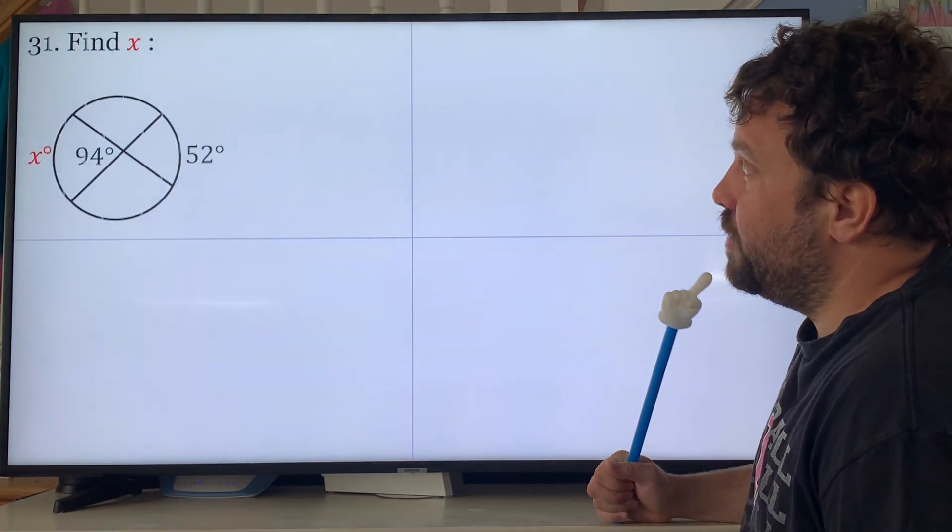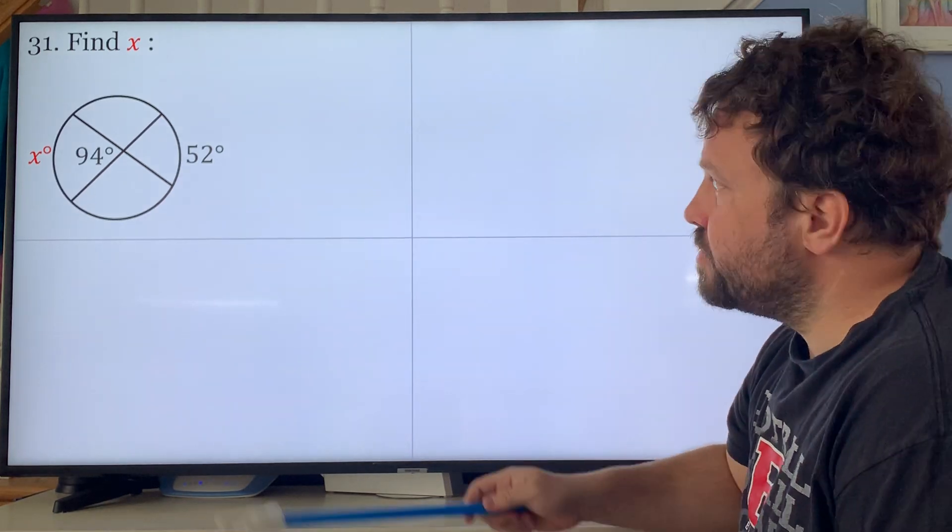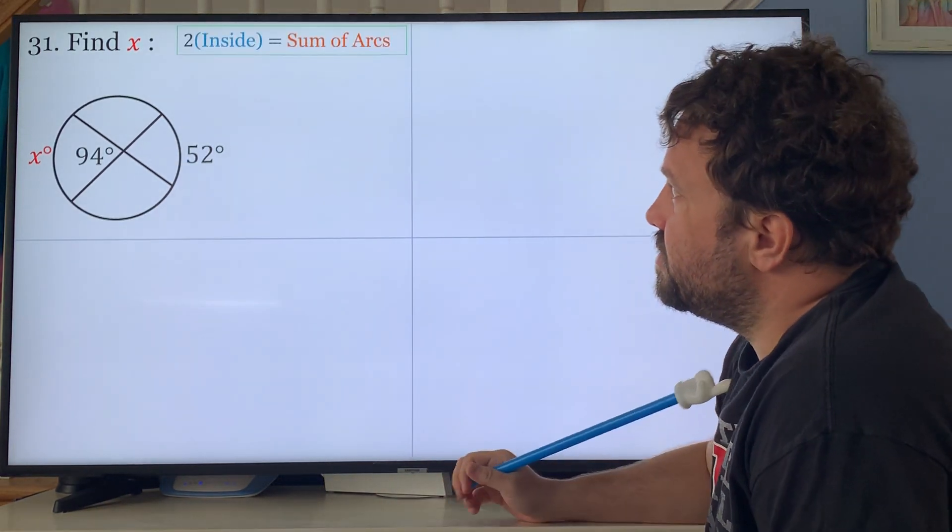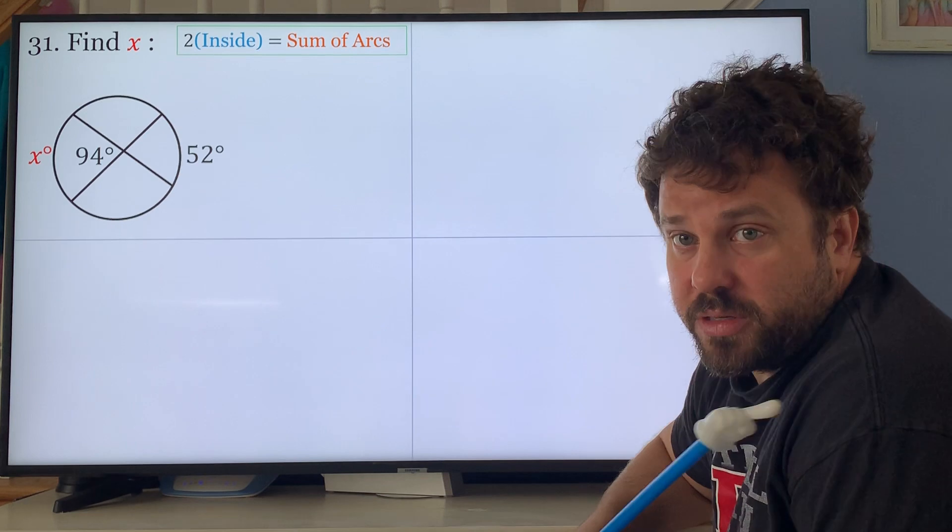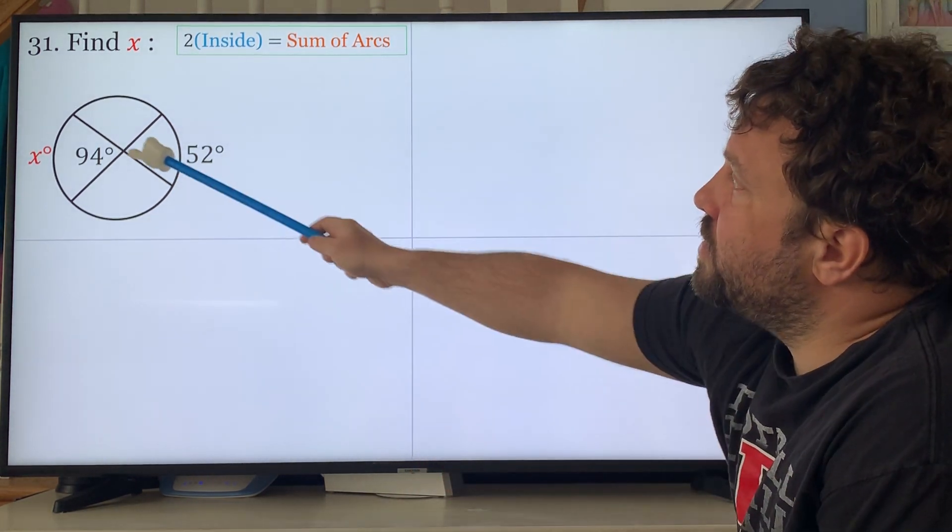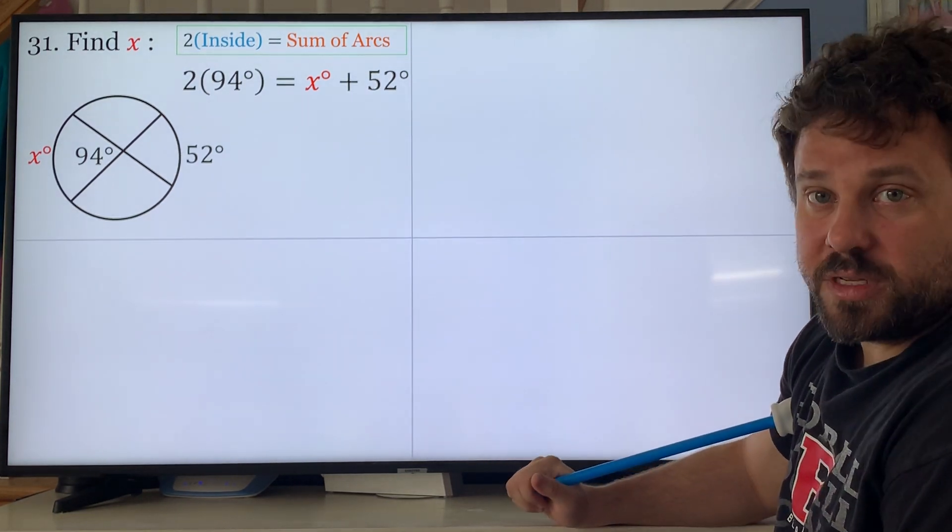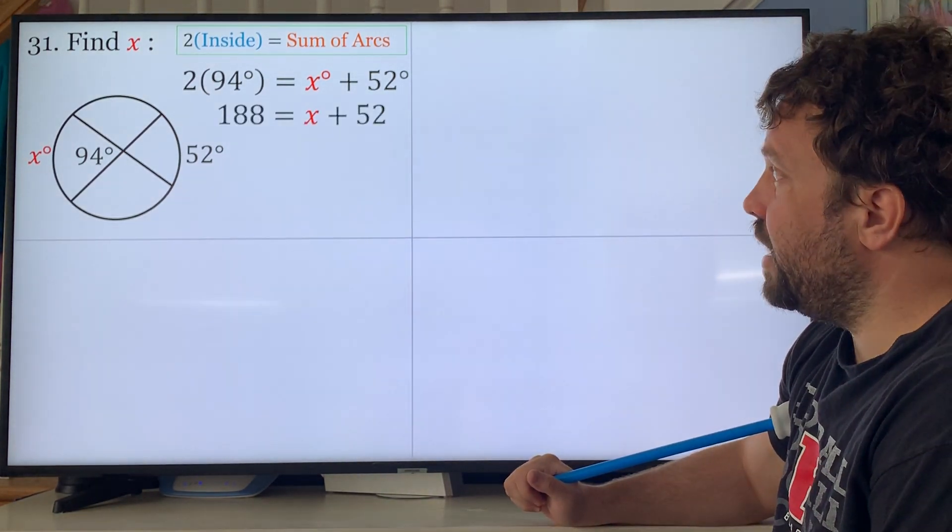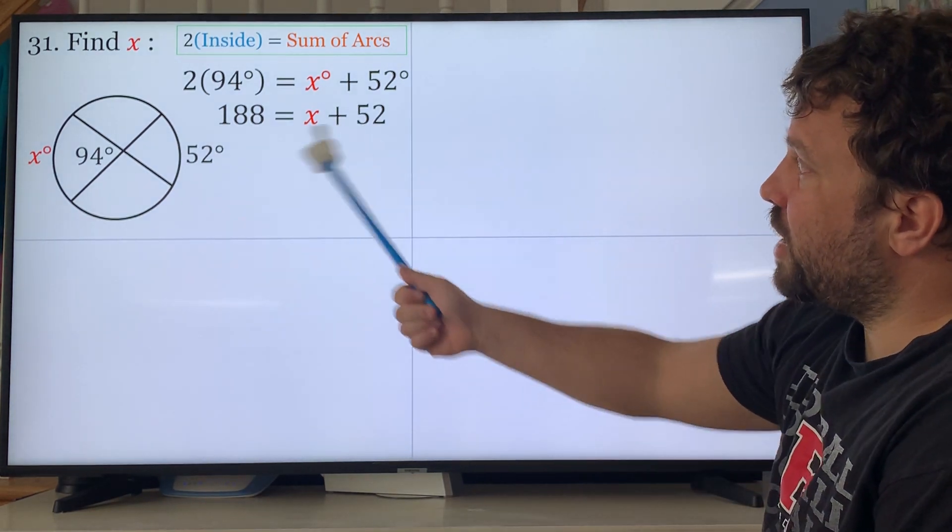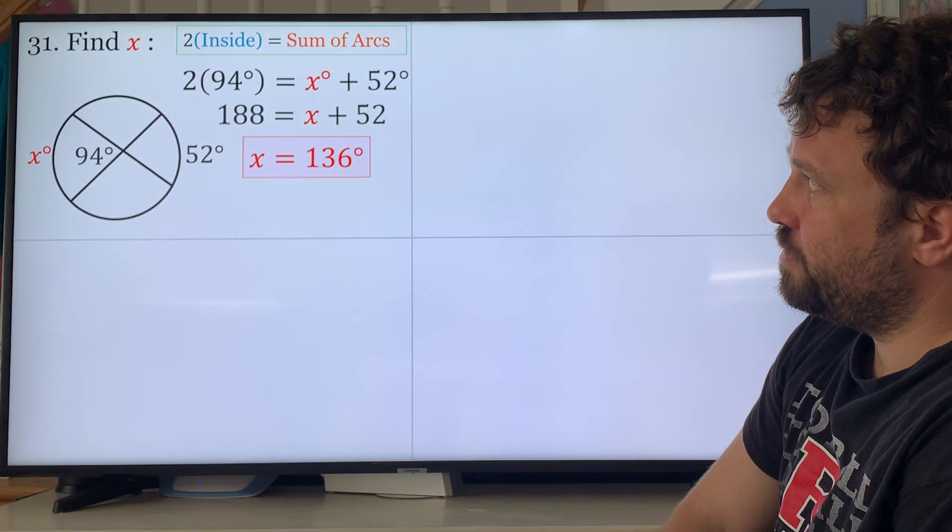Find x. You remember this rule: internal angle. Two times the inside angle equals the sum of the arcs, or the inside angle equals half the sum of the arc. So two times 94 equals x plus 52. What's 94 times 2? 188 equals x plus 52. Subtract 52 from both sides, x equals 136.